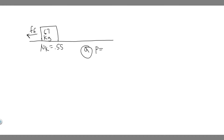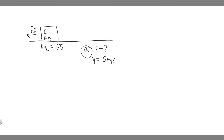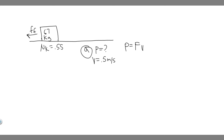We're going to say P equals question mark because that's what we're solving for. We know the velocity we're going to be pushing at is 0.5 meters per second. The formula we're going to use is power equals force times velocity. So if we want to solve for the power, we need to know the force we're going to be exerting and the velocity.